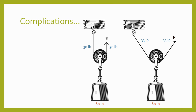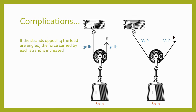This rule about the IMA of a pulley is usually true, except when the strands opposing the load do so at an angle other than 180 degrees. If the strands are angled, the force carried by each strand is increased. The pulley on the left supports the load with two vertical strands and has an IMA of 2 to 1. The pulley on the right has an IMA less than 2 to 1 because the strands support the load at an angle — instead of sharing the load equally, the actual force applied to both strands is higher than 30 pounds. We'll learn how to calculate forces like these when we learn about force vectors.